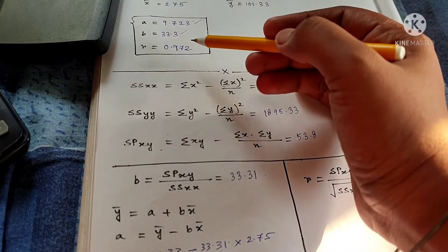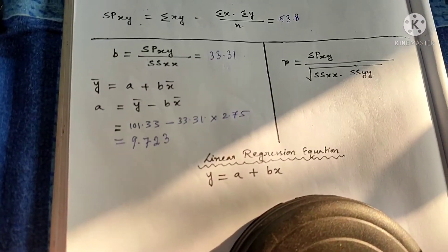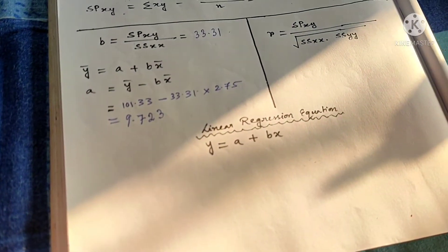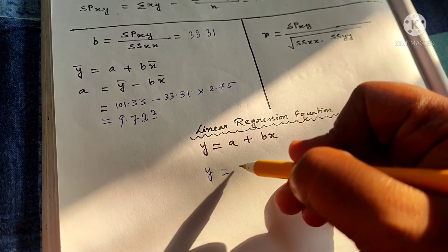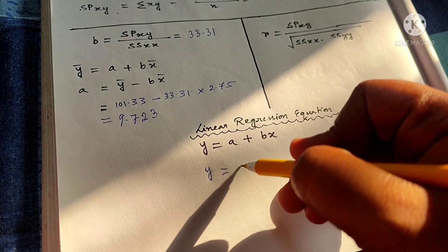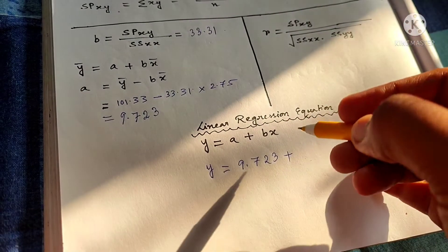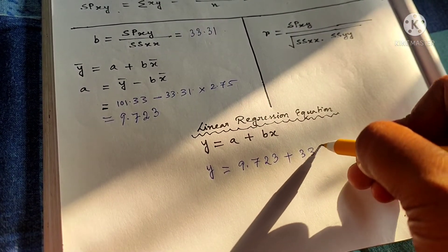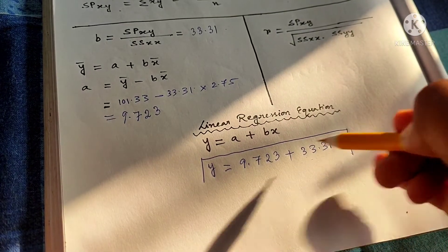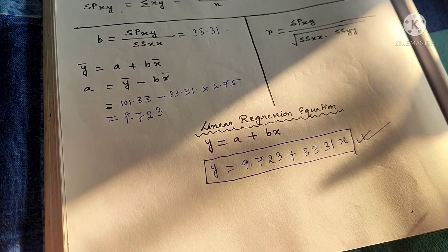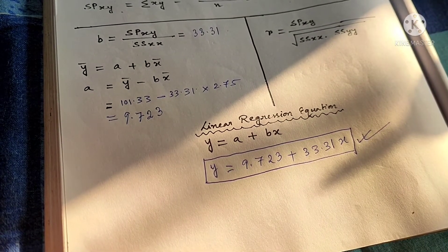Now you have to find out the linear regression equation. As we all know, the linear regression equation is Y equal to A plus BX. You have already found the value of A which is 9.723 and B which is 33.31. So your linear regression equation is: Y equals 9.723 plus 33.31 into X. This is your answer.